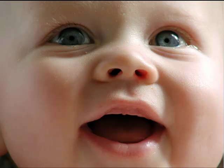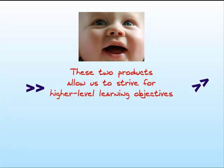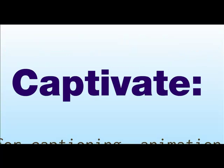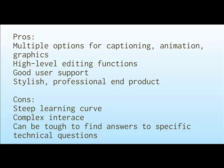These features make librarians and educators happy because they allow us to strive for higher-level learning objectives. So that brings us to our screencasting software smackdown — how do we choose between Captivate or Camtasia? Captivate offers multiple options for designing captions, animations, and graphics, very high-level editing functions, pretty good user support, and the end product is highly professional-looking. On the downside, I find the learning curve very steep with Captivate. The user interface is extremely complicated, and it can be tough to find answers to specific technical questions in the Captivate help features. I usually had to turn to online forums to find answers to my questions.